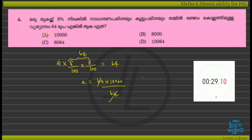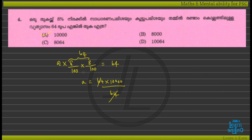XS is 64, and the answer is 64. So the answer is A. It is a 30-second calculation. 100 into 100 is 10,000. 8 into 8 is 64. So we complete this problem.